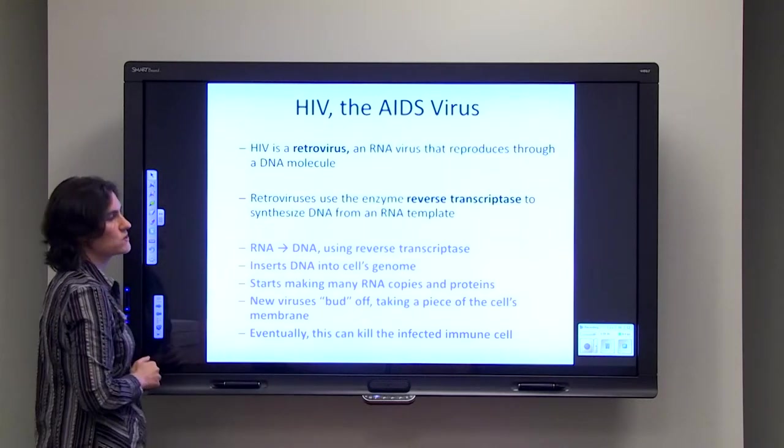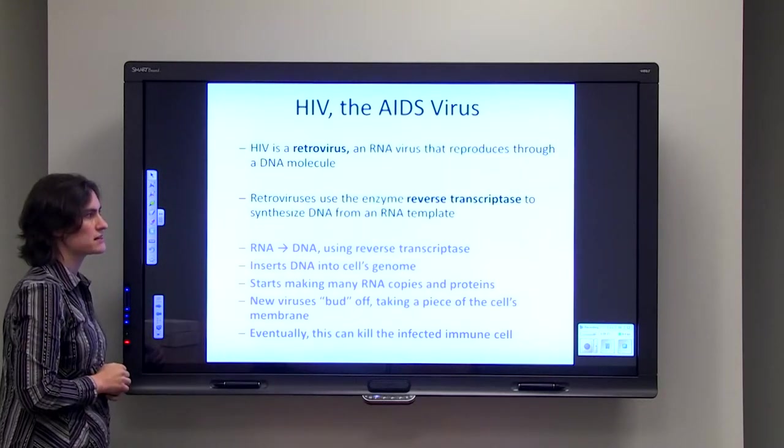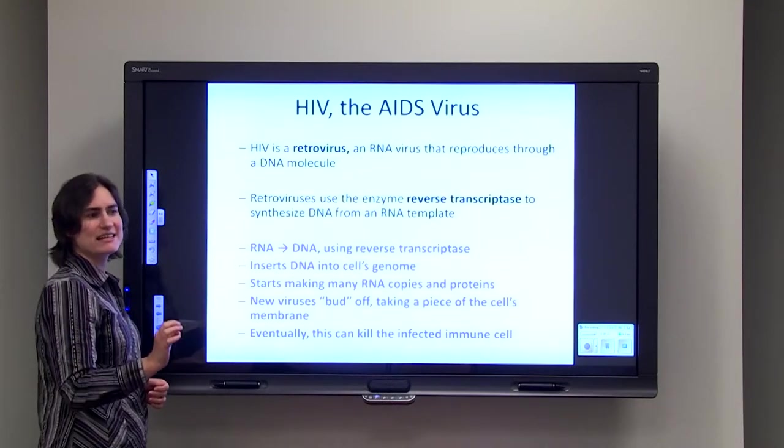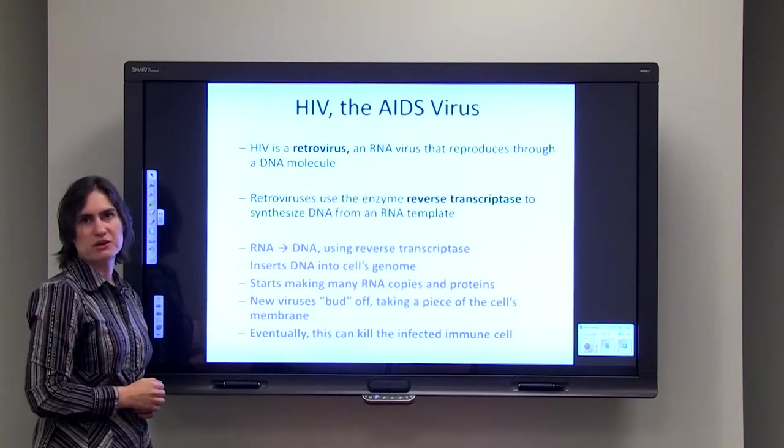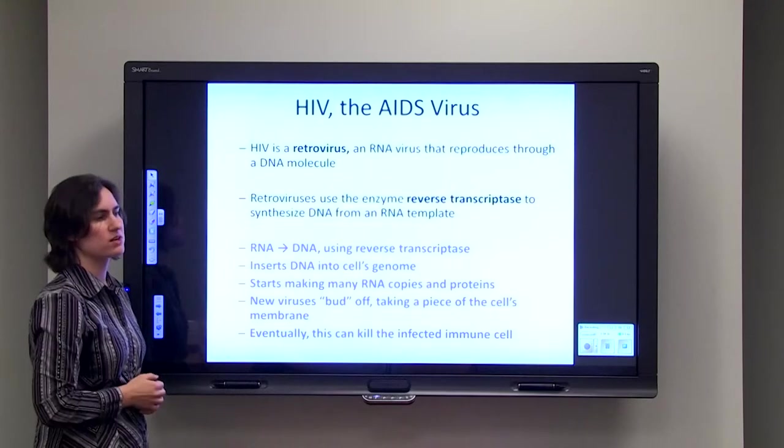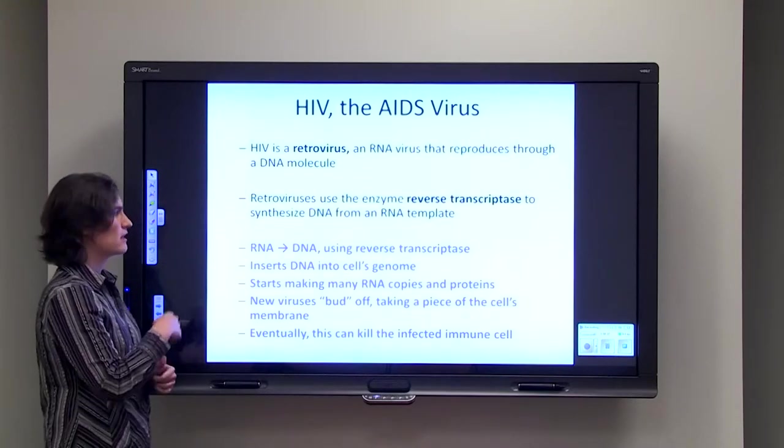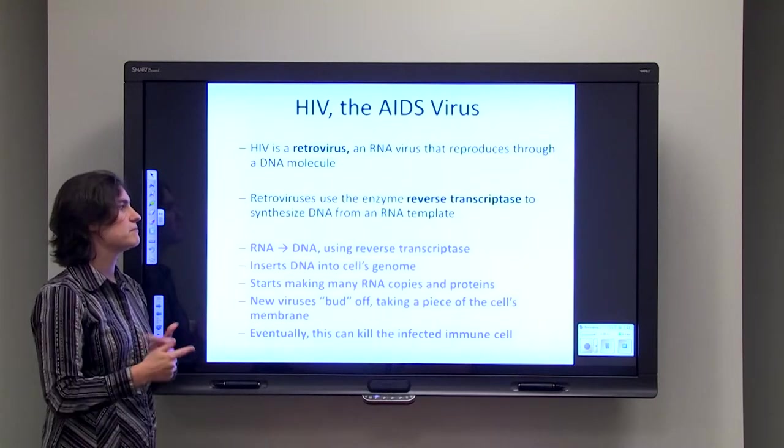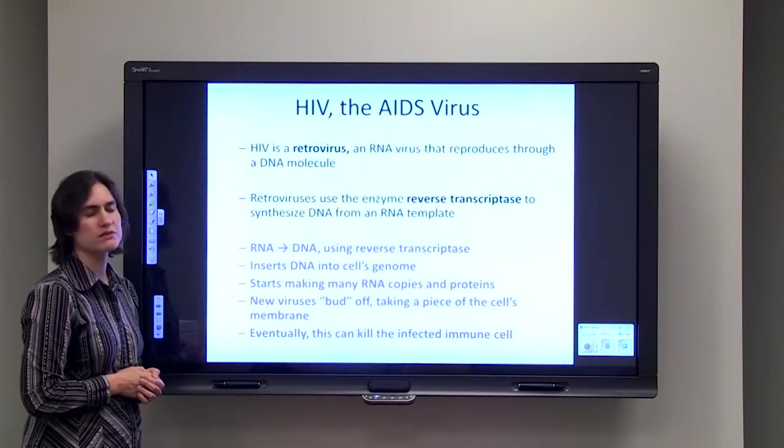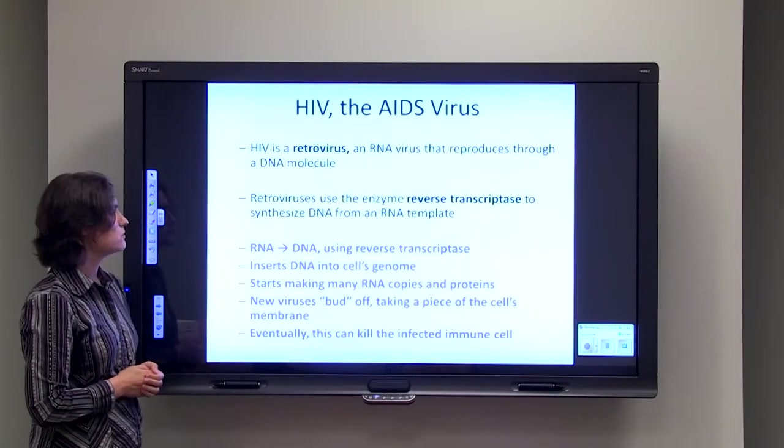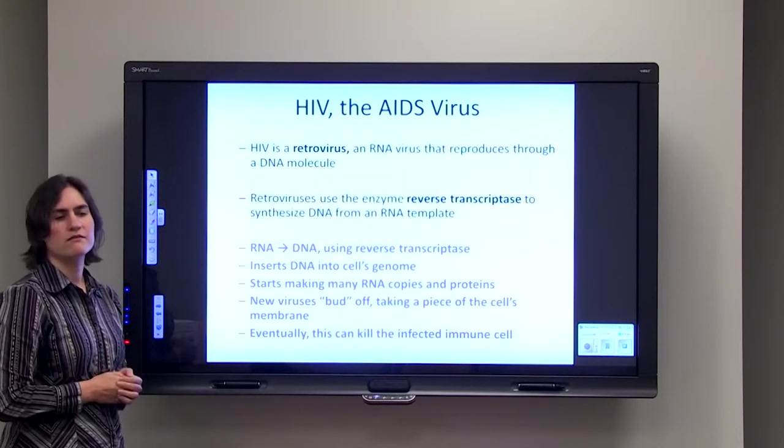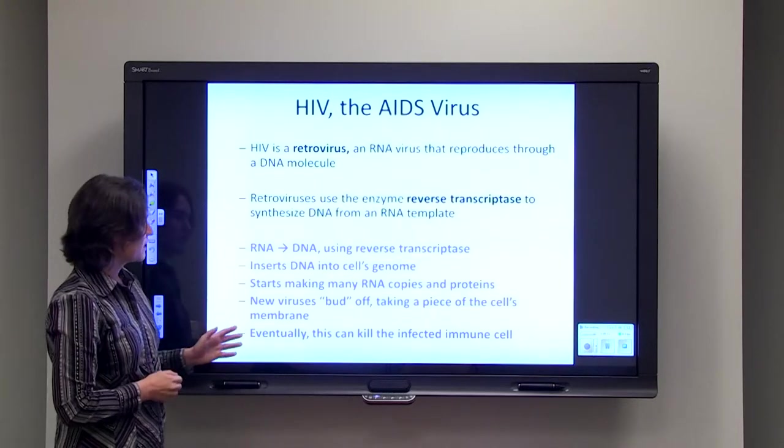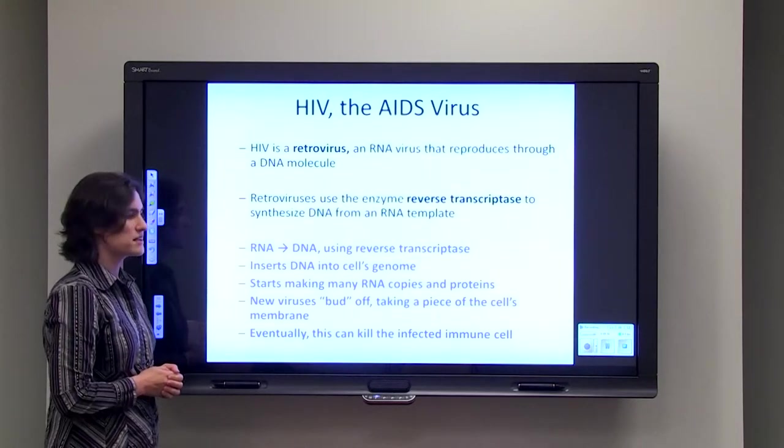Here's how it works. We start off with an RNA genome from the virus, and then we're going to make DNA using the enzyme reverse transcriptase. Then we're going to insert that DNA into the cell's genome, so it's going to be permanently inserted. Then it's going to start making many copies of RNA and many copies of viral proteins, and then those little new viruses are going to bud off of the original cell, taking a little bit of that membrane with it. Eventually through this process of making many viruses, the cell eventually can be killed from this infection.